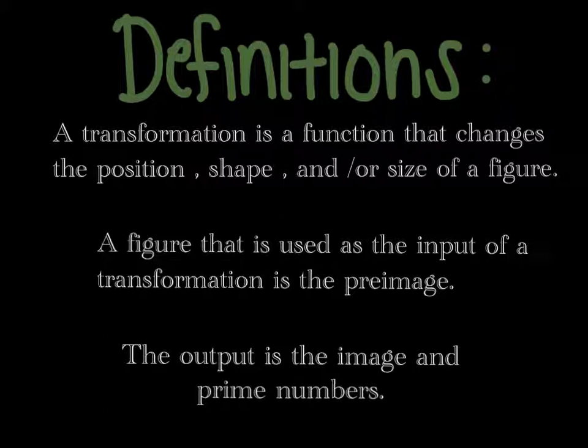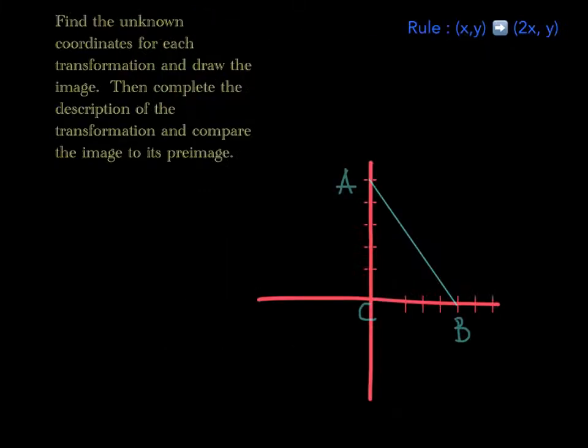Before we get started, we need to know the definitions of a transformation pre-image and image. So our problem for today is find the unknown coordinates for each transformation and draw the image. Then complete the descriptions of the transformations and compare the image to its pre-image. There are four parts to this question.